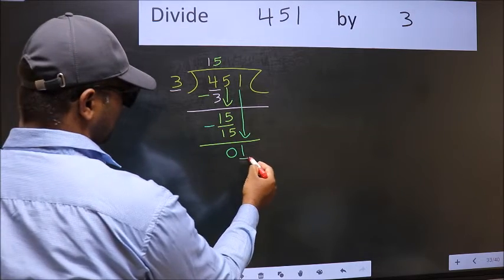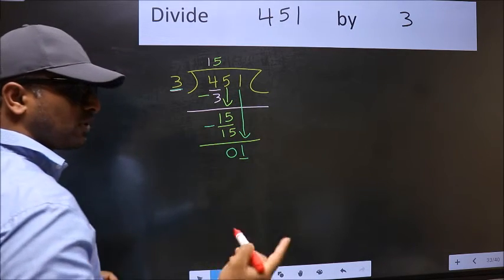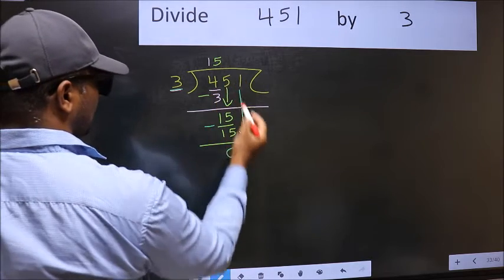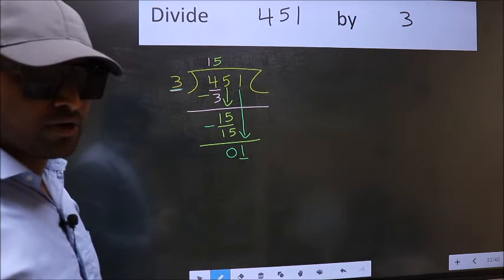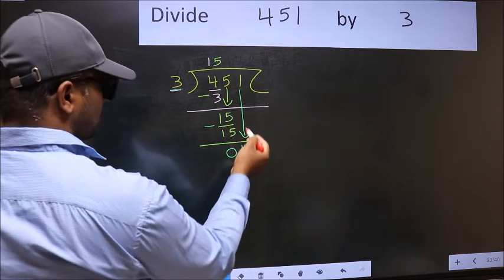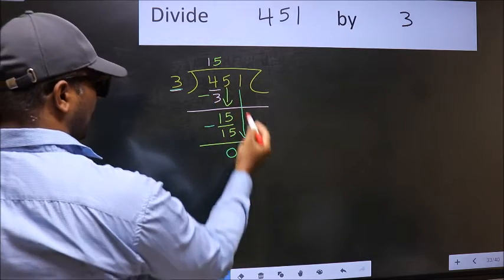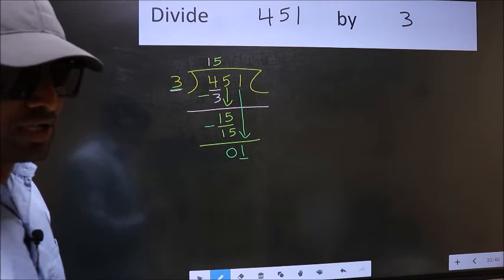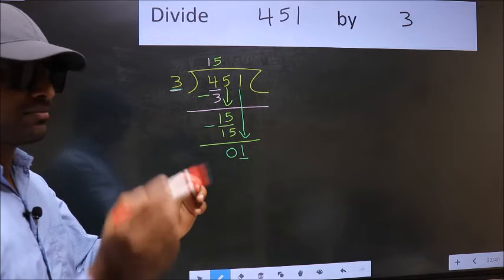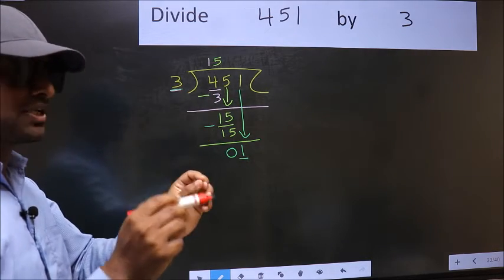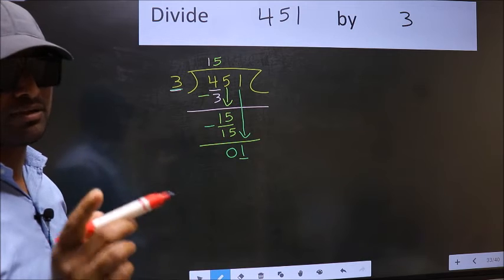Here we have 1 and here 3. 1 is smaller than 3. So what many do is they directly put a dot and take 0 here, which is wrong. Because just now you brought this number down, and in the same step you want to put a dot and take 0 — that is wrong. Bringing the number down and putting a dot and taking 0 in the same step — you are not supposed to do that.